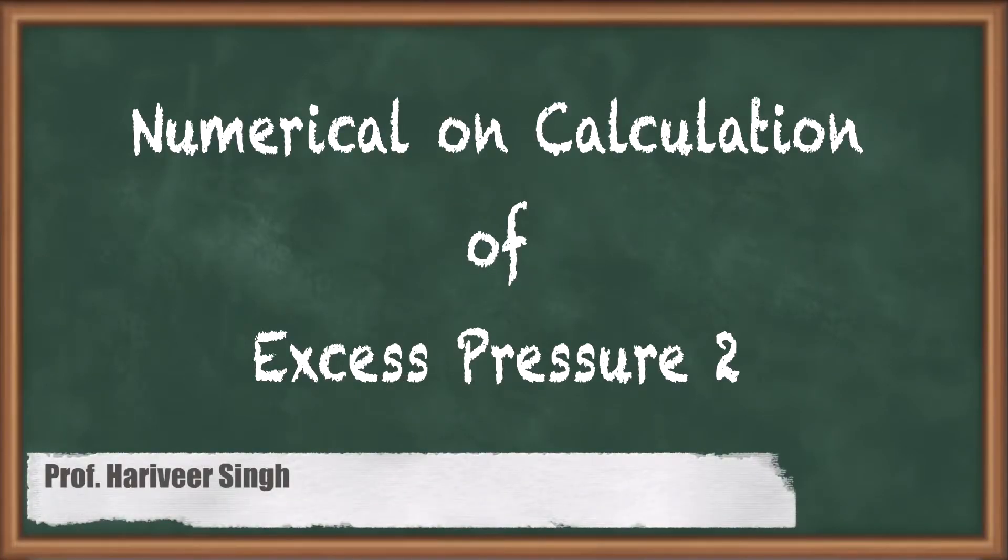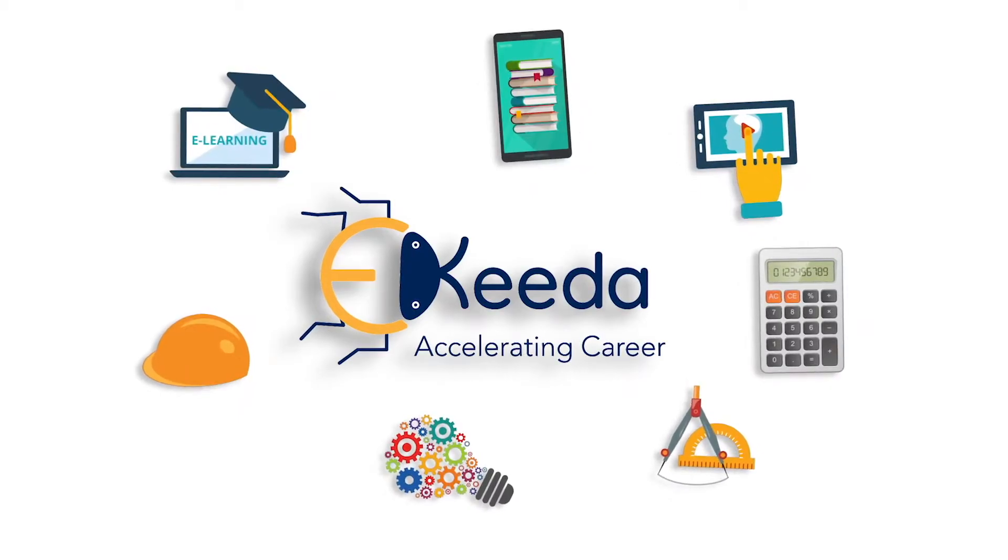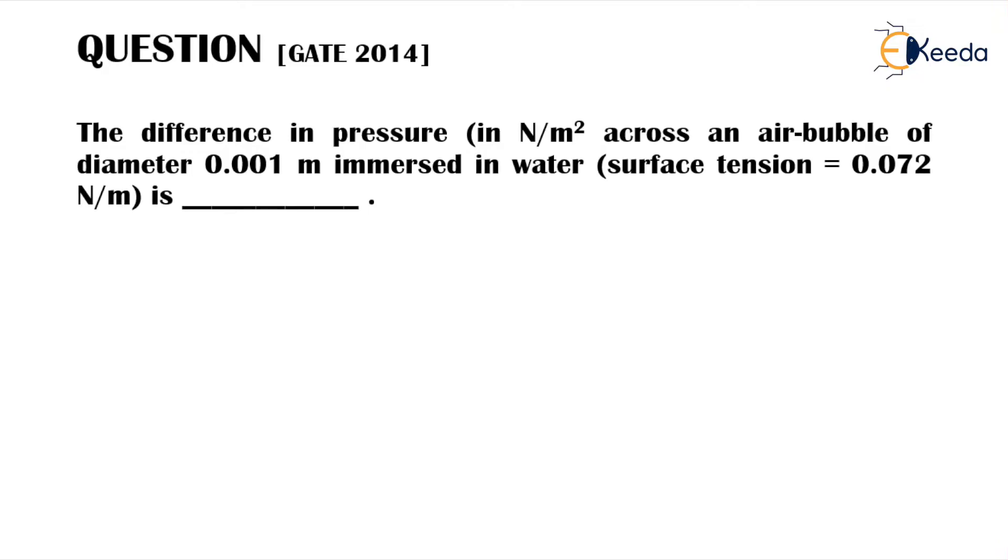In this video we will solve a numerical problem on the calculation of excess pressure. This is a 2014 GATE problem. The difference in pressure in Newton per meter square across an air bubble—now remember the air bubble is same as that of water droplet.